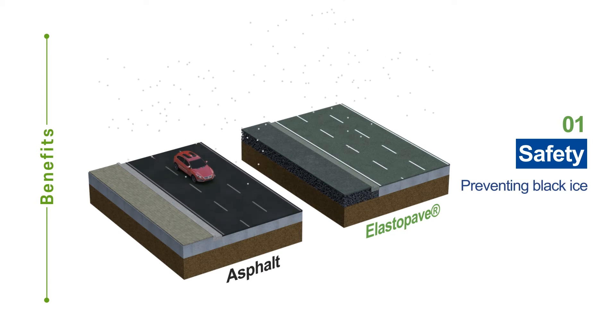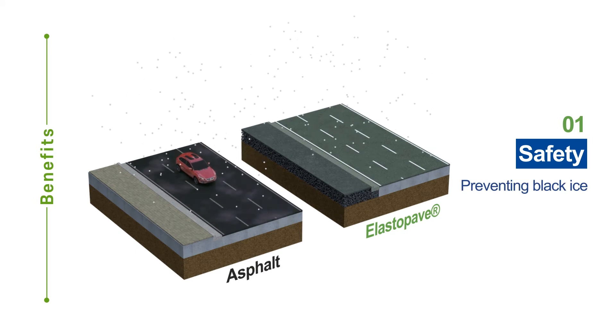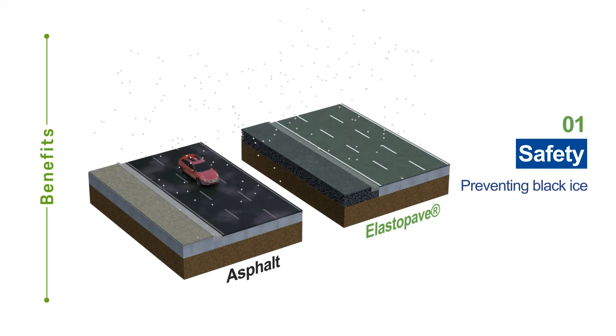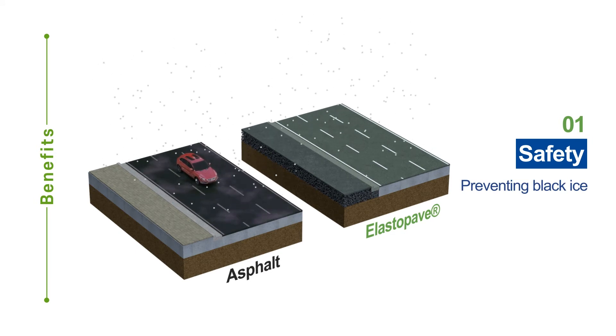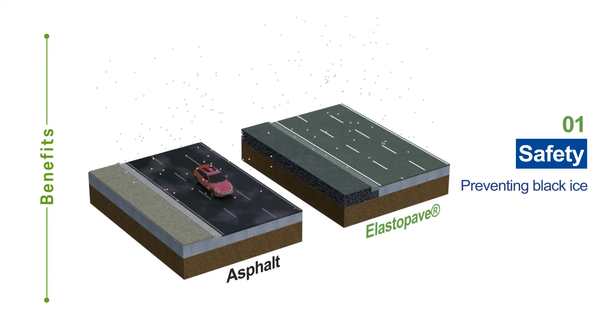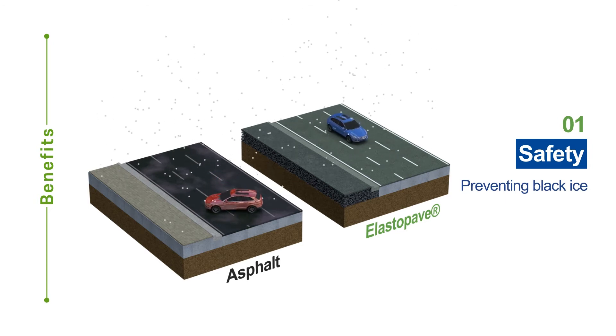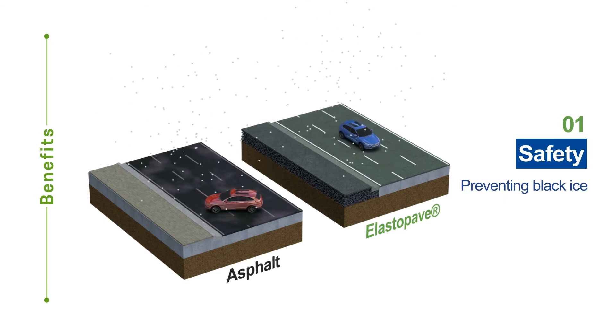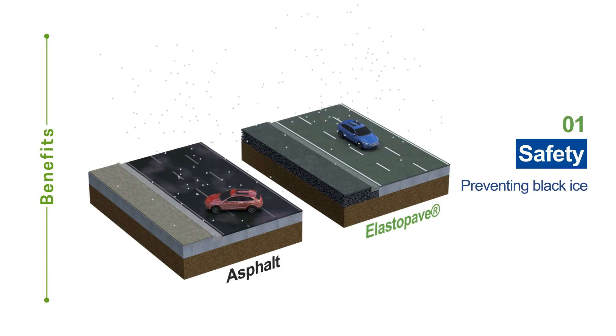In winter, asphalt roads are slippery due to melted snow. With ElastoPave, snow melts and drains through the openings, which prevents black ice from forming on the road.